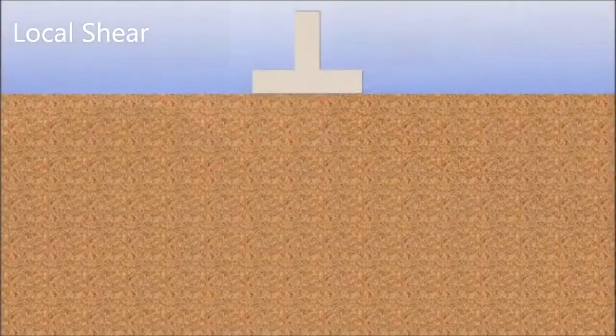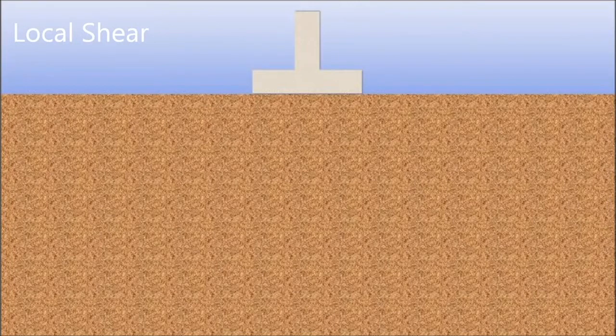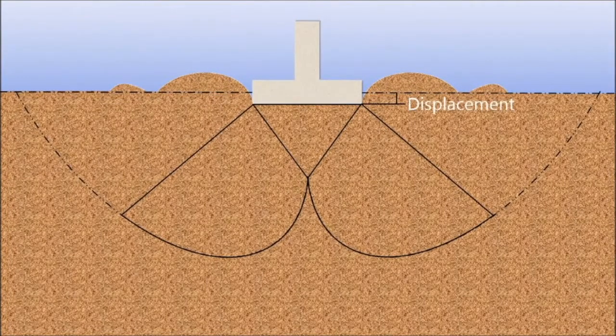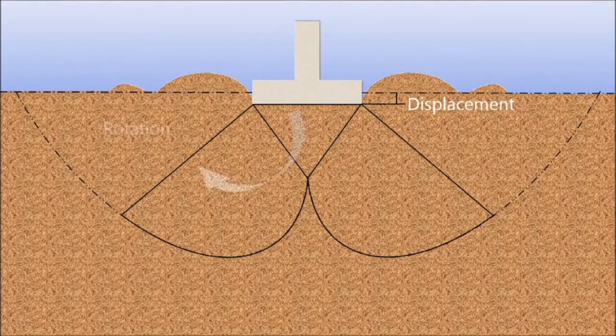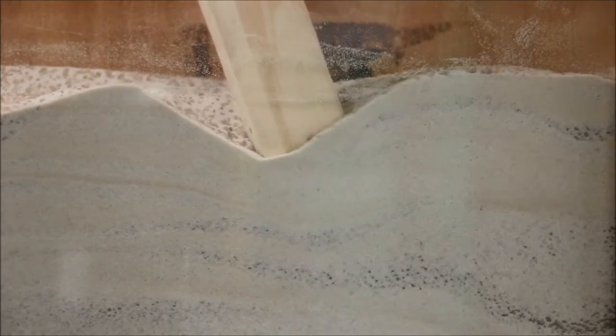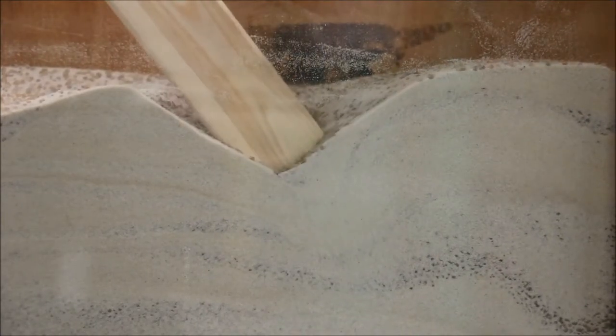Local shear failure occurs in cohesionless and loose to medium-dense soils. This failure mode has a well-defined shear surface directly under the footing, which may or may not be seen at the surface. Local shear failure happens gradually, as the footing continues to experience settlement and movement along the shear plane.